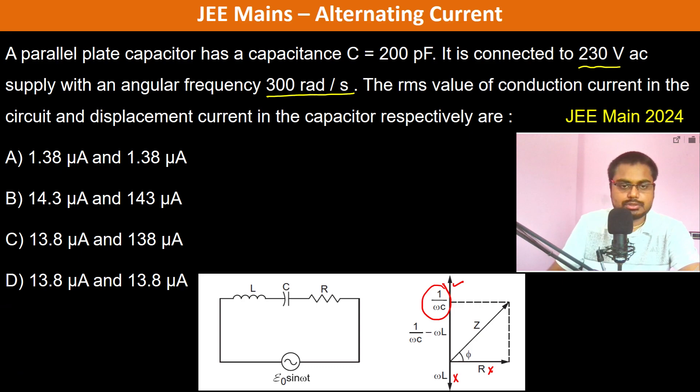So 1/(ωC) equals 1 divided by 300 into 200, and this goes as 10 to the power -12.